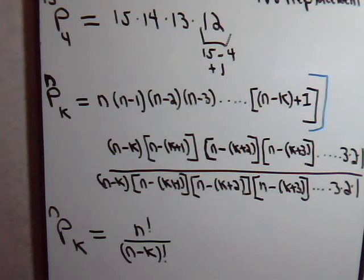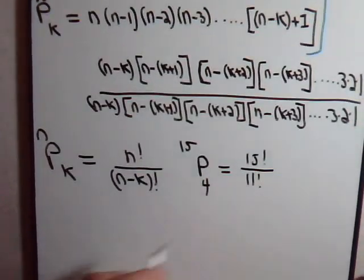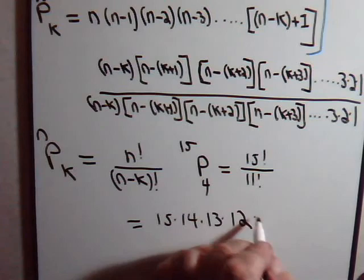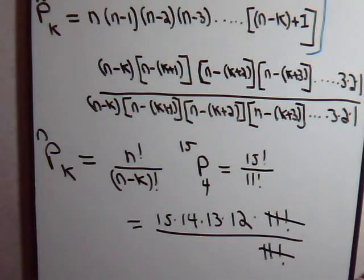So there's our general expression. So if we have n number of distinct objects and we take out k of them without replacement, this here then would tell us the number of ways that we can do that. So for example, if we had, as we did earlier, T subscript 15, 4, this would be equal to 15 factorial divided by 11 factorial. And this equals 15 times 14 times 13 times 12 times 11 factorial, that's this, divided by 11 factorial, which is the same answer that we got earlier using the general counting principle.